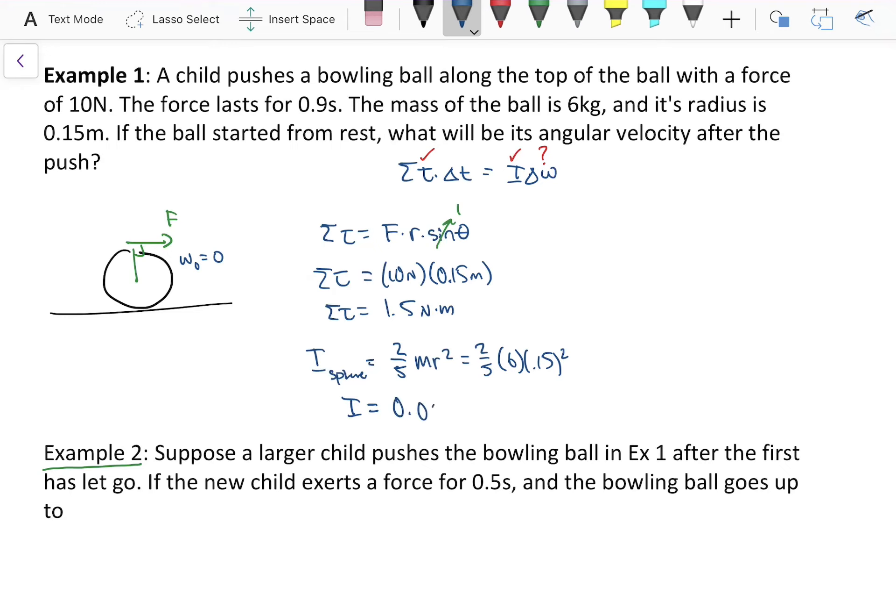Just double checking my numbers there. And so we've got our tau, we got our I, now we can solve for what the delta omega is. I can put in 1.5 times 0.9 seconds should equal 0.054.